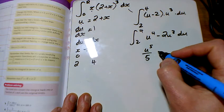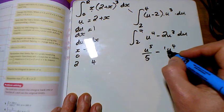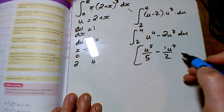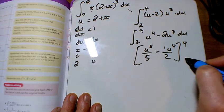So 1/5 u to the 5 minus 1/2 u to the 4, between 4 and 2.